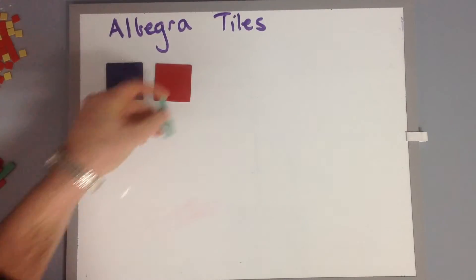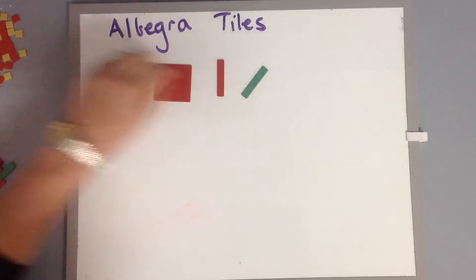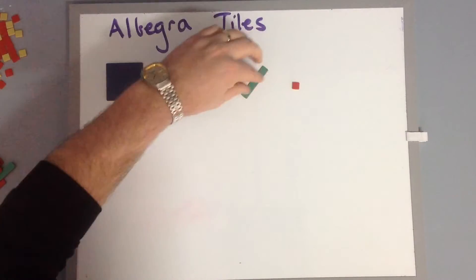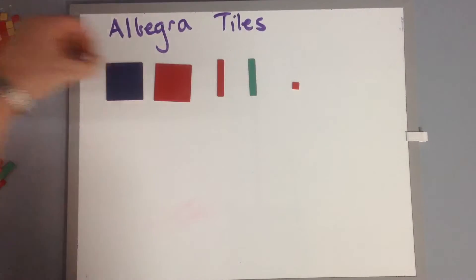For our large ones we've got red and a green side. For our next size we've got red and a green side, and then we've got red and kind of a yellowy color for our small ones.